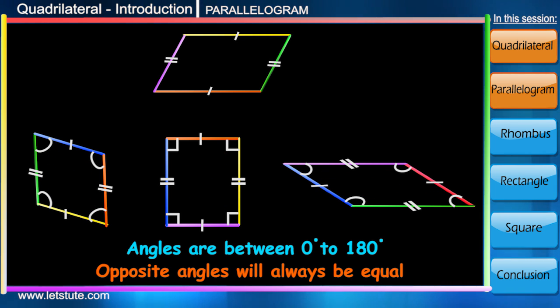But its opposite angles will always be equal. We have been saying that opposite sides of a parallelogram are equal and parallel.